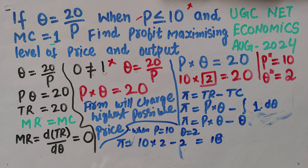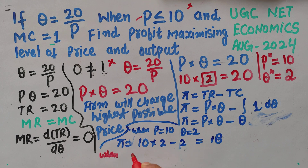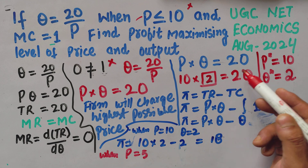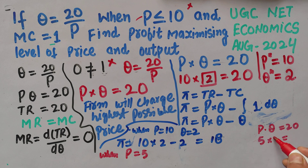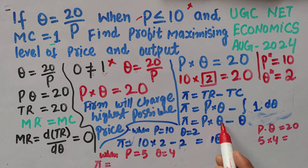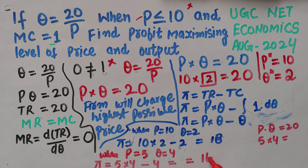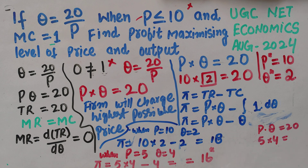Now let's take a different price, say p = 5. Since p × q = 20, when p = 5 we get q = 4. The corresponding profit = (5 × 4) − 4 = 20 − 4 = 16. You can see that profit has decreased when we charged a lower price than 10, confirming that p = 10 and q = 2 is indeed the profit-maximizing combination.